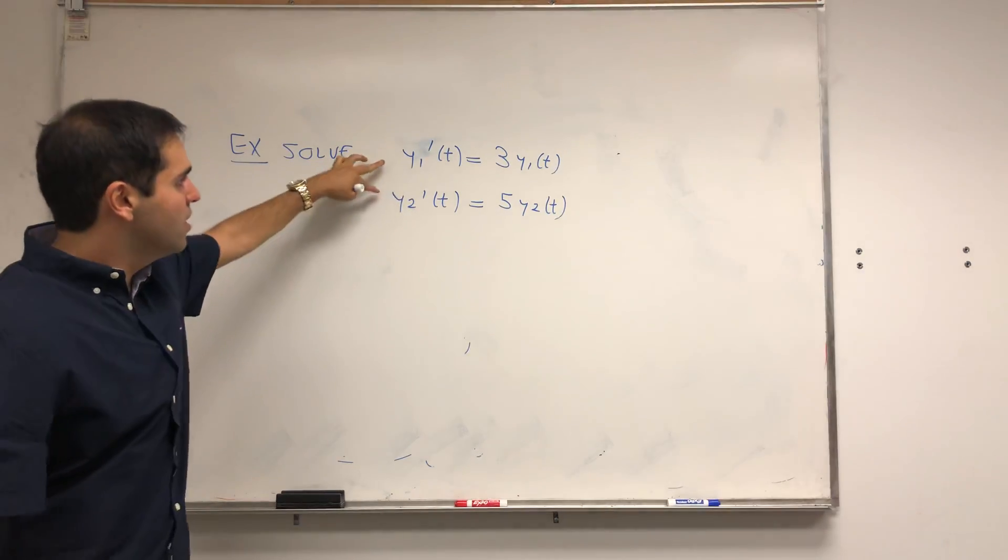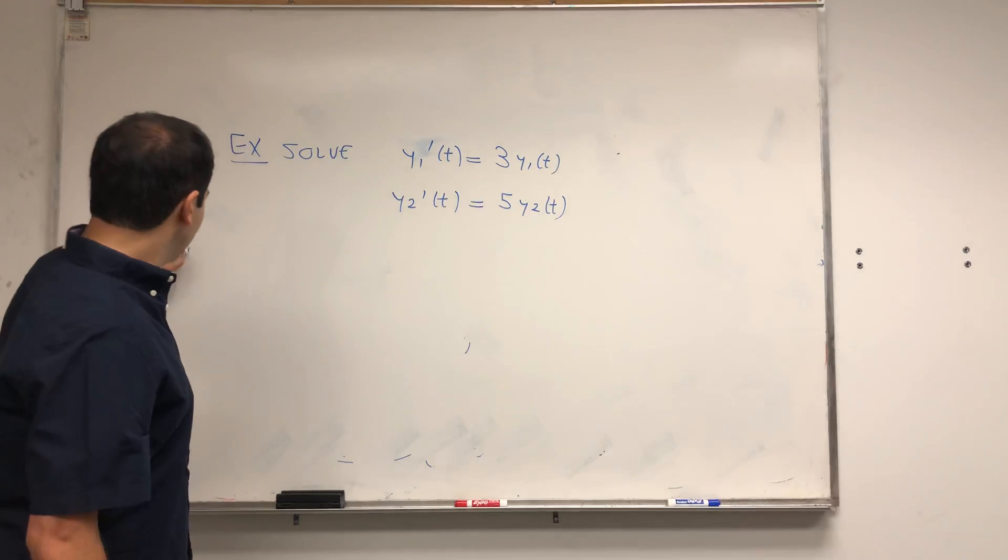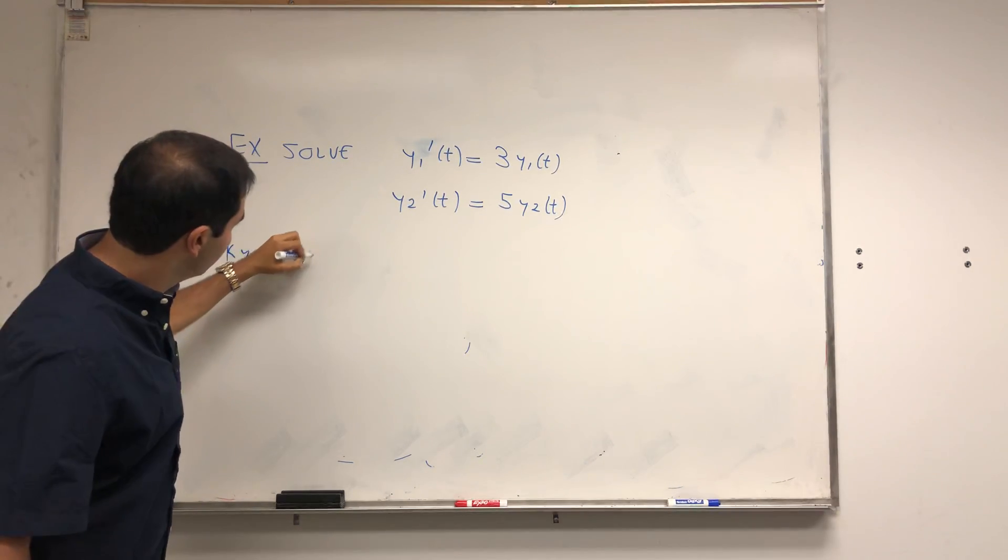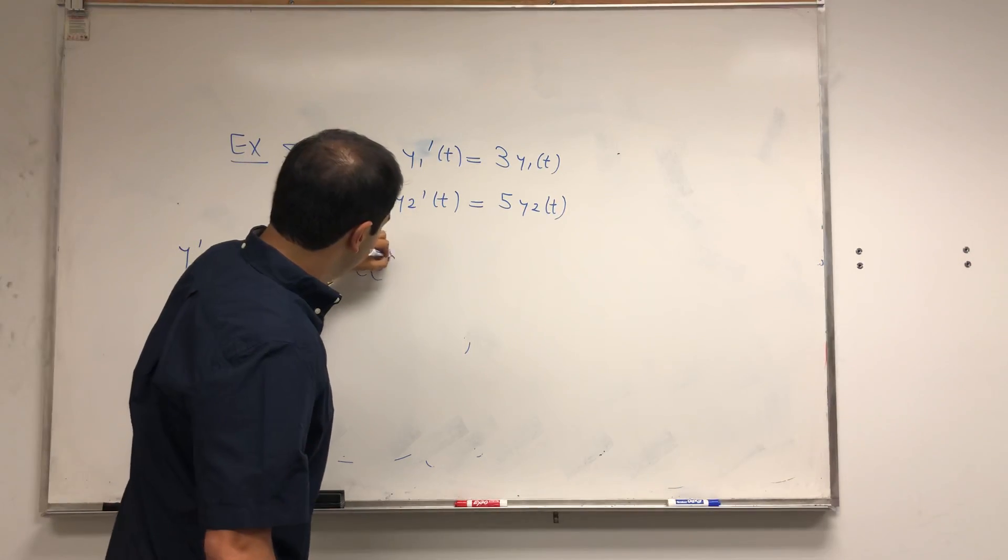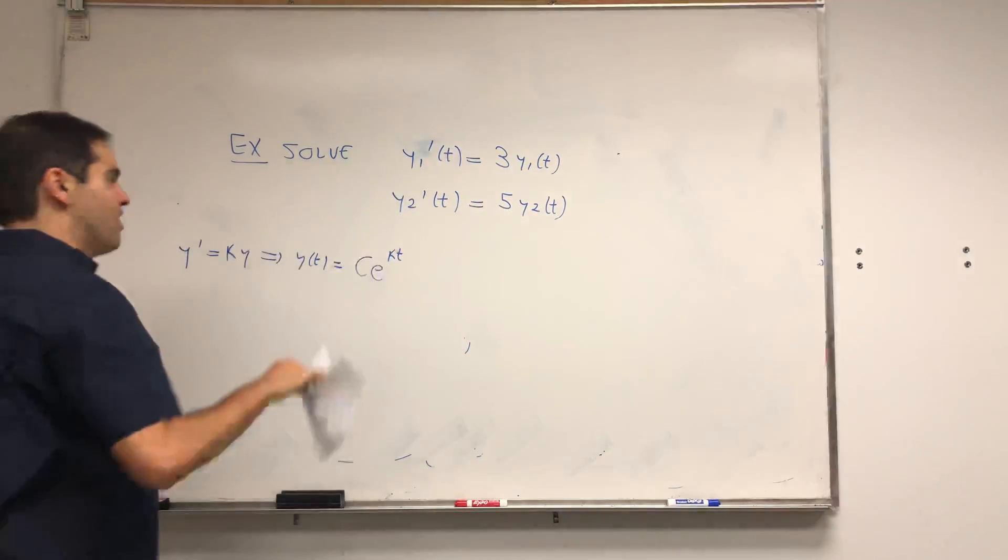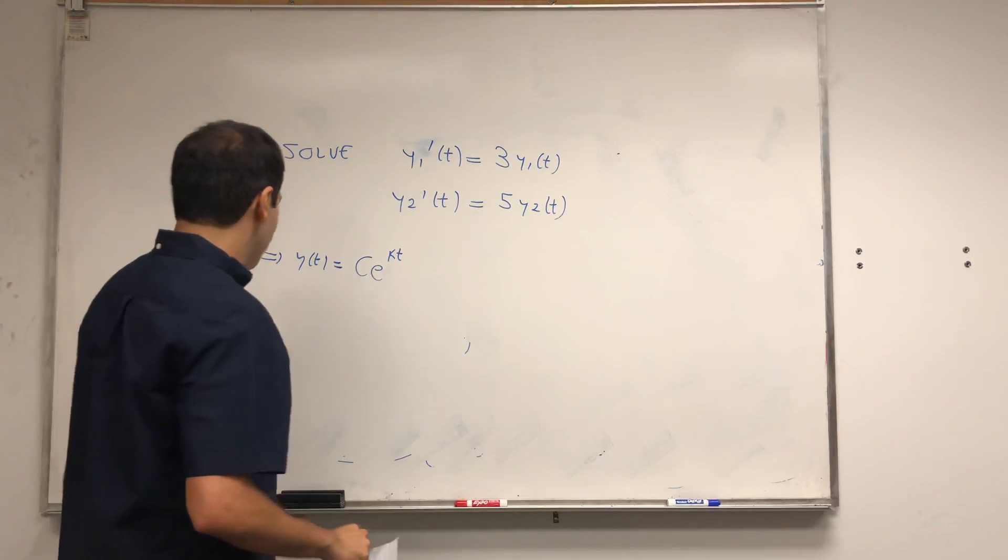Remember, to solve y prime equals ky, you just get y of t equals c times e to the kt. Let's check it out.